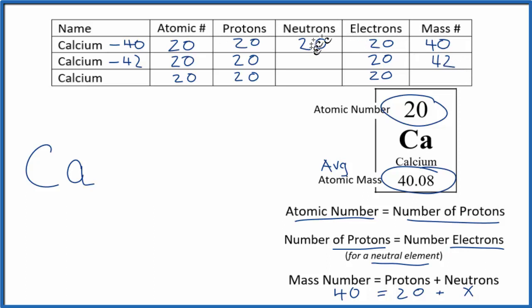So to find the neutrons, protons plus neutrons give the mass. 20 plus 22, that would give us this mass number. For this isotope, about 0.6% of calcium atoms will have this isotope here.